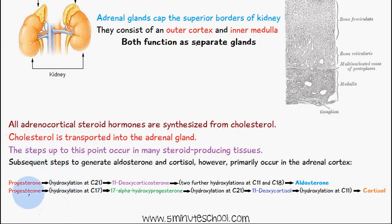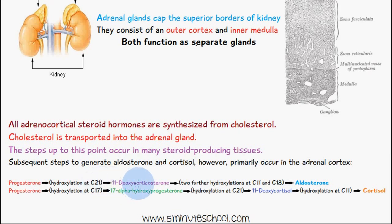Progesterone is a precursor of both steroid hormones. For aldosterone: we have hydroxylation at carbon 21, which gives us 11-deoxycorticosterone, followed by two further hydroxylations at carbon 11 and carbon 18, giving us aldosterone.